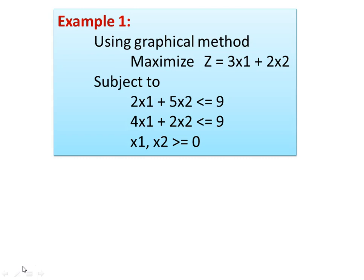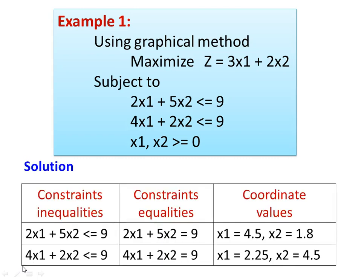This is the problem. You have two variables, X1 and X2, and two constraints — a very simple problem. The first step is to prepare a table. The constraint equations are inequalities — less than or equal to — so you have two constraints: 2X1 plus 5X2 less than or equal to 9, and 4X1 plus 2X2 less than or equal to 9. These we have to convert into equalities.